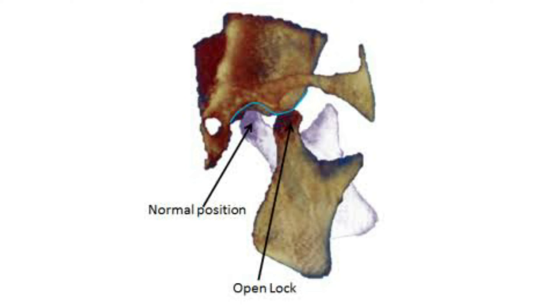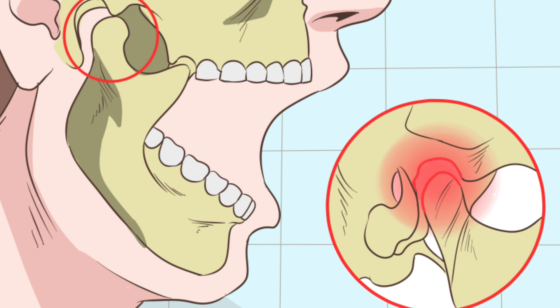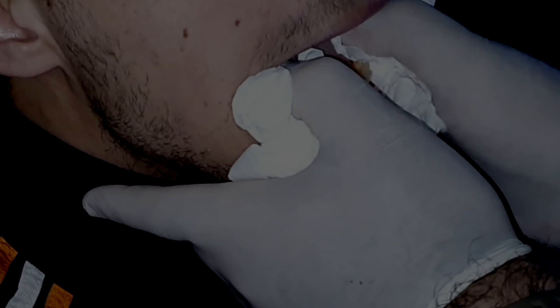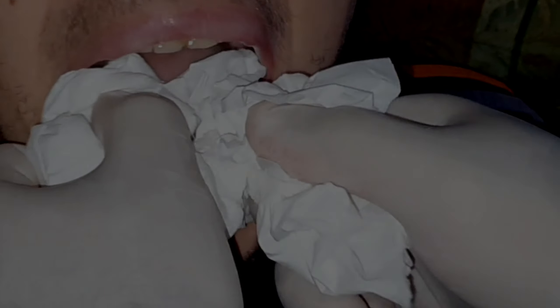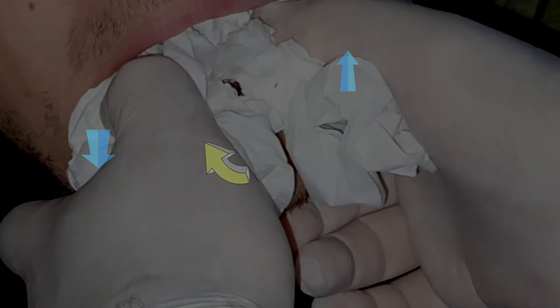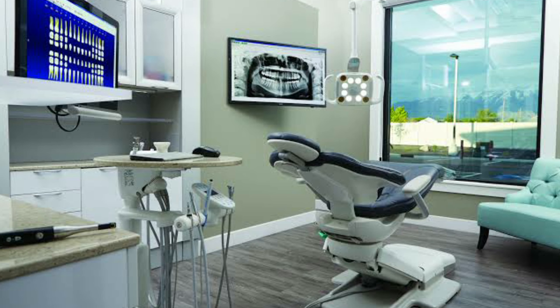During dental treatment, patients could experience an open lock after some time of mouth opening and are unable to close because of excess muscle pull. The dentist must guide the mandible properly by protecting both thumbs with cotton and placing them on the occlusal surface of the lower teeth, then pushing one side of the mandible downwards and pulling the other side upwards while rotating the mandible posteriorly. This will cause the jaw to unlock and the patient will be able to close their mouth again.